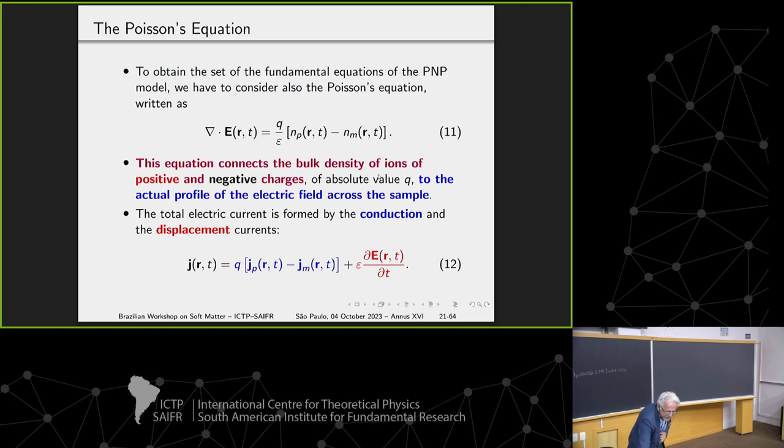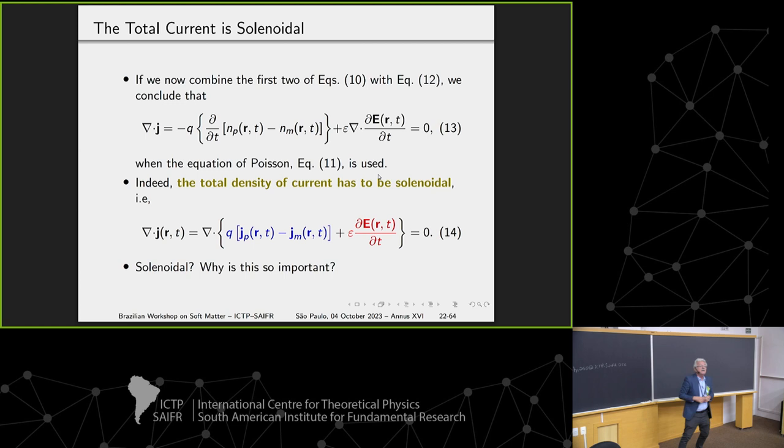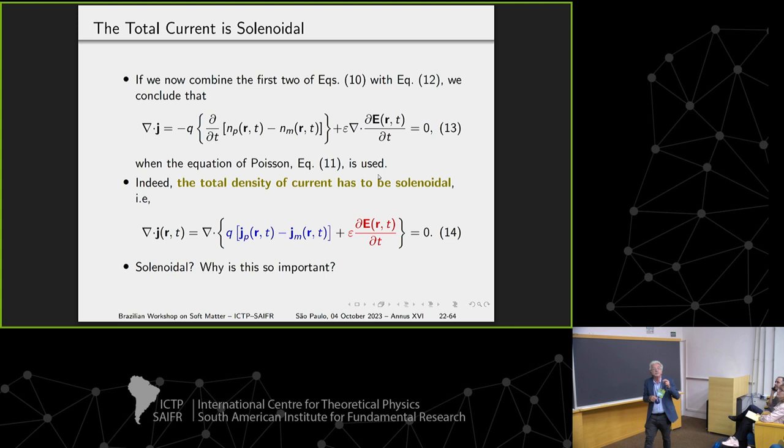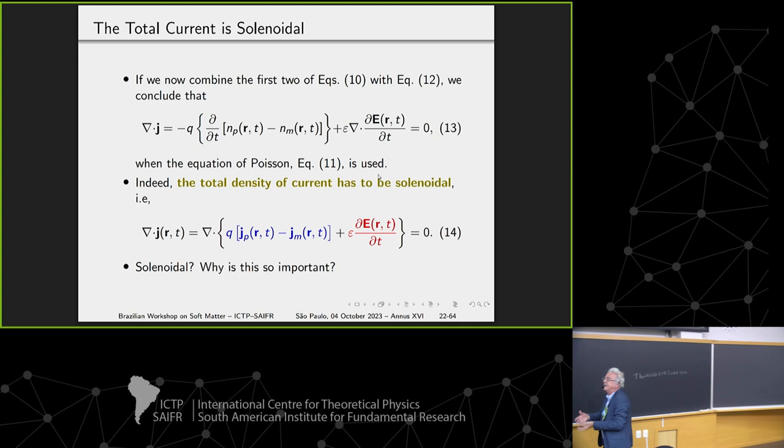in a very beautiful and complicated paper. But anyway, if you put this current, you can demonstrate that in the model J is solenoidal. This means that the divergence of this vector has to be zero. This is a property of Maxwell equations.